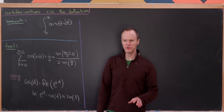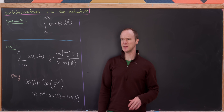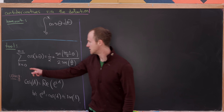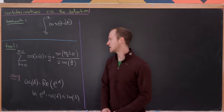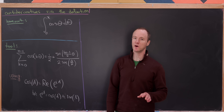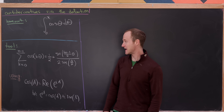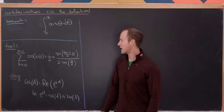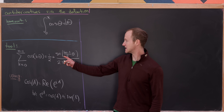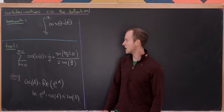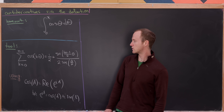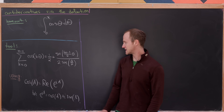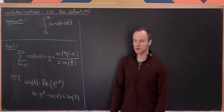In order to do this maybe seamlessly, we're going to use the following identity. We have the sum as k goes from zero to n minus one of cosine(kθ), which is equal to one-half plus the sine of (2n minus 1)/2 · θ, all over two times the sine of θ over two.